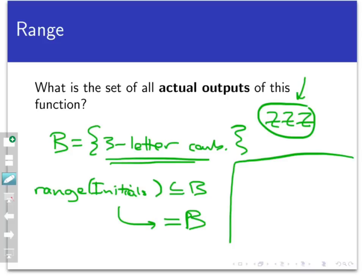It seems unlikely. It seems like there has to be somebody out there whose initials are these. So I think the range here is going to be B. I think the range is going to be the entire codomain in this particular situation. That's not always the case. Functions' ranges do not necessarily have to equal their codomains, but I think they do in this case. I think that every point in the codomain does actually appear as the output of this initials function at some point.